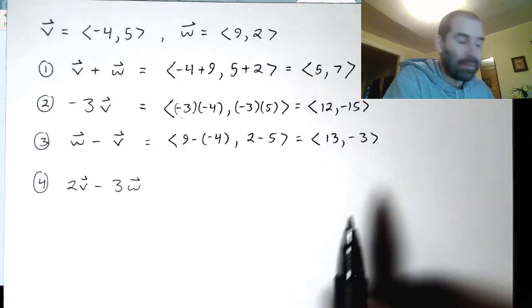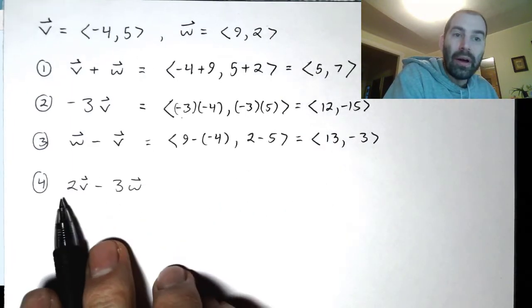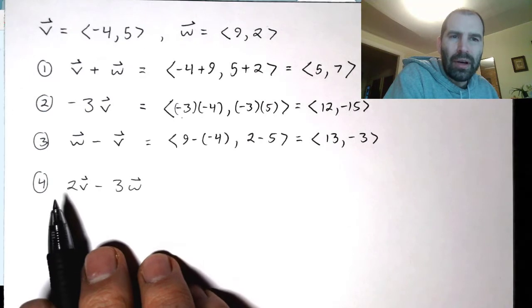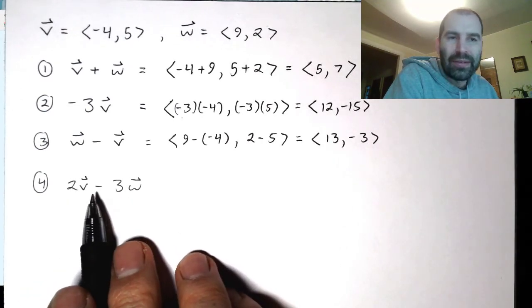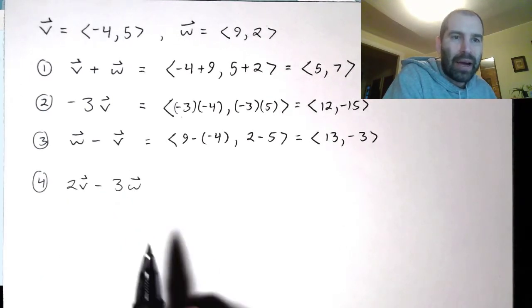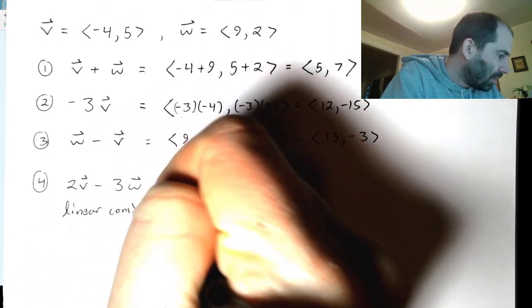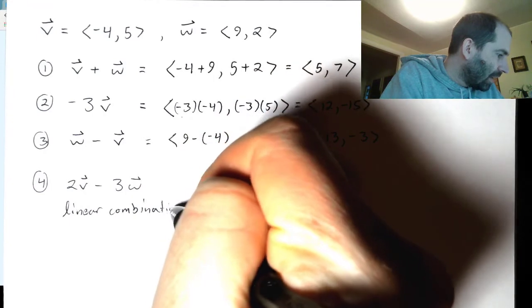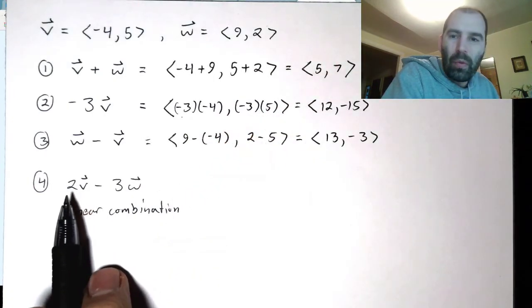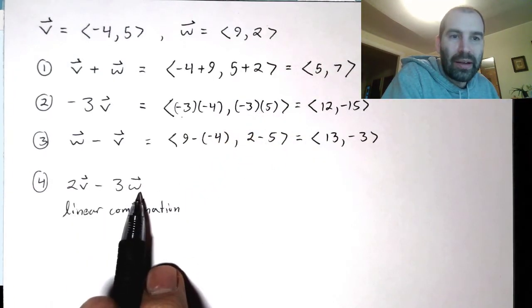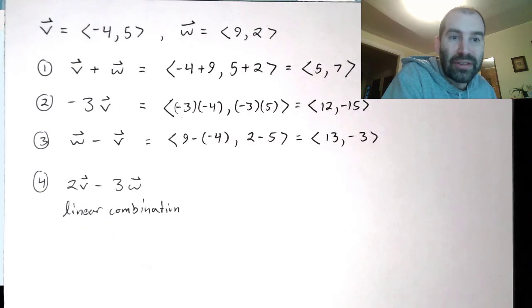Pretty straightforward there. And then finally, let's do something where we have multiplication by numbers and subtraction here. And by the way, there's a name for this. This is called a linear combination. A linear combination is where you multiply each vector by a number, and then either add or subtract them. And that's called a linear combination of two vectors.